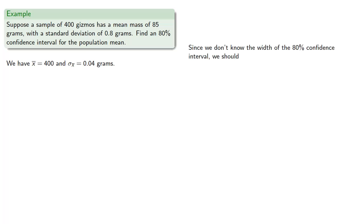Now, since we don't know the width of the 80% confidence interval, we should see how wide the interval needs to be to give us an 80% probability.